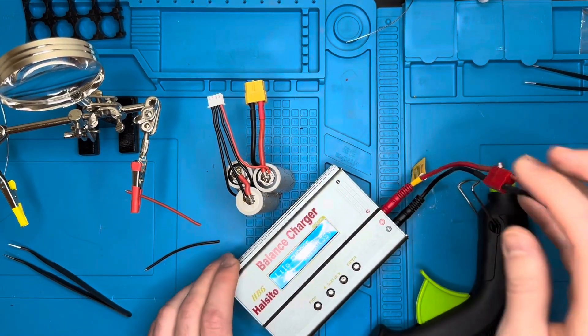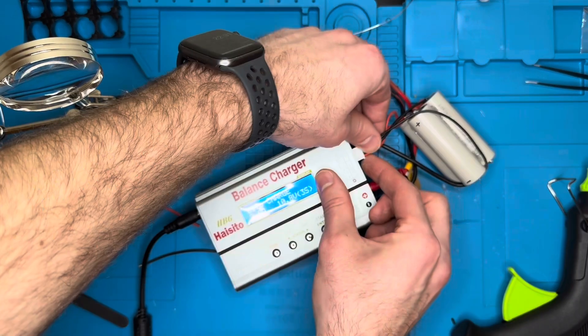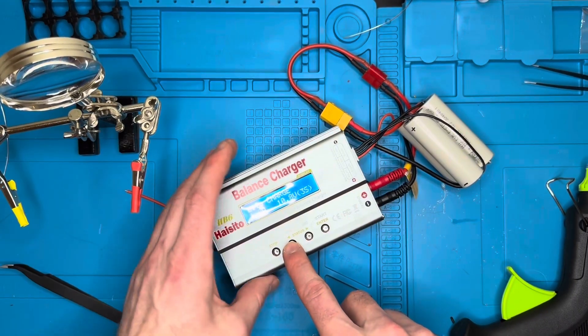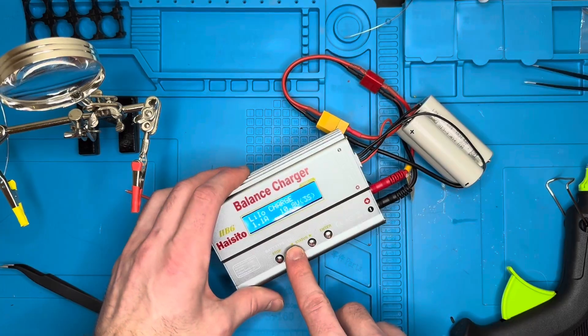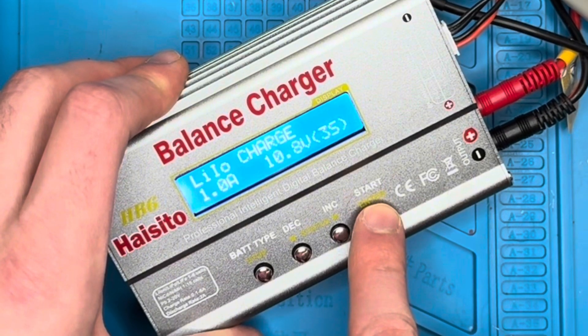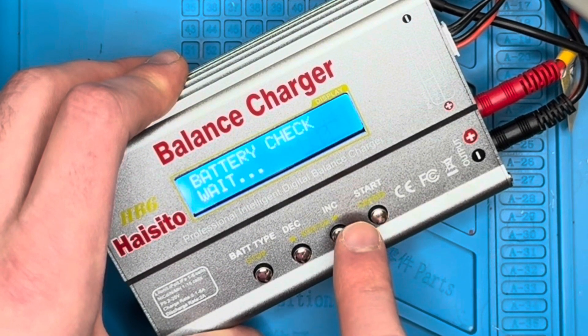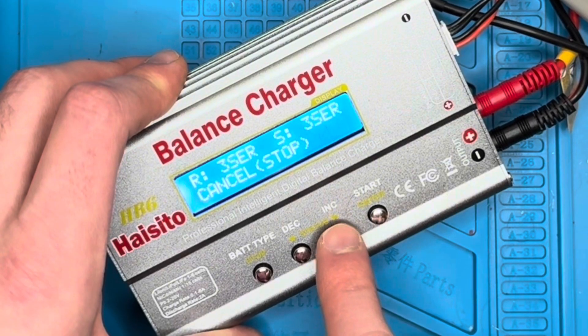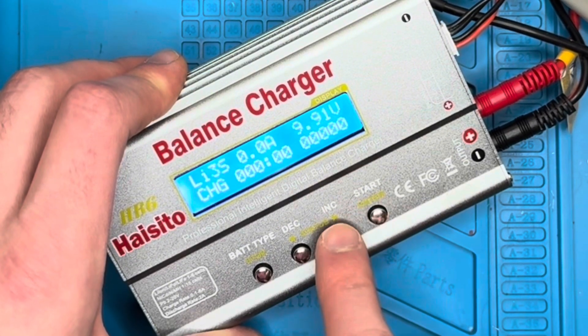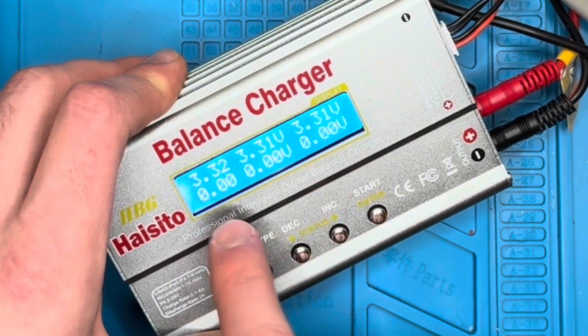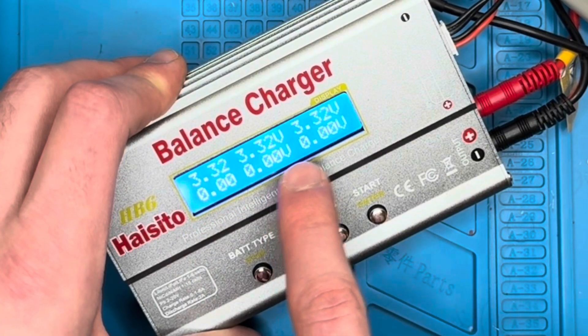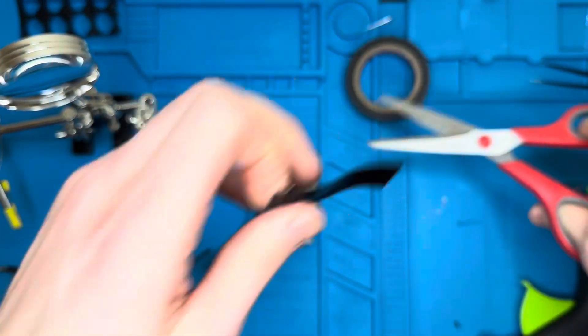A secondary check is you could use a balance charger. Simply just hook it up. If you've done anything wrong, it'll probably beep at you. I just go to charge it, make sure it's on the lithium ion mode, and it'll show me the voltage of each cell group. Right here. And they're all the same. They all look good. Battery is all wired up and good to go.